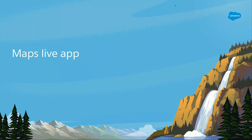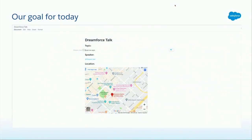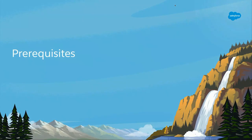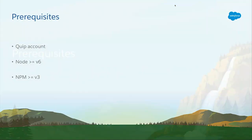Let's talk about our Live App for today. We are going to create a very simple Live App, and the purpose is to show you how easy it is to make them. We are going to make a Google Maps Live App. The end product is going to look something like this — there's a Quip document, and you have a map inserted right inside it. This map is live and can move around. As for prerequisites, you just need a Quip account, Node on your computer, and NPM. You also need some level of JavaScript expertise, and familiarity with React is helpful but not necessary. We'll also talk about how you can create your own Live Apps using different frameworks such as jQuery.